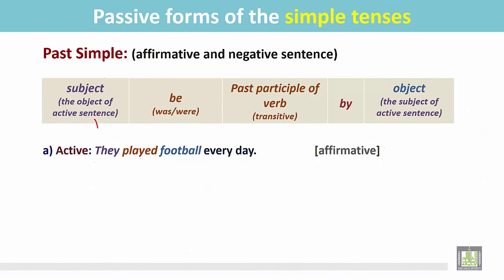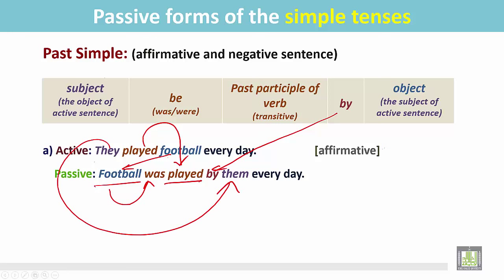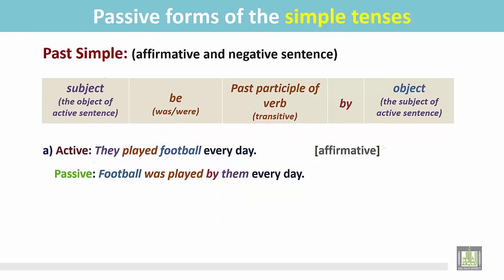See the examples. 'They played football every day.' Here 'they' is the subject, 'played' is the transitive verb, and 'football' is the object. The sentence is in the affirmative form. For the passive form, the object becomes the subject — 'football' is singular, so we place 'was', then the past participle 'played', then the preposition 'by', and the object from the active sentence.